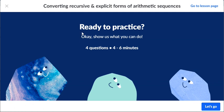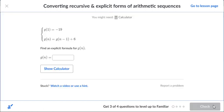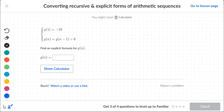Converting recursive and explicit forms of arithmetic sequences. Okay, so here we're given two parts. We're given what the first number is. It's going to start at negative 19.